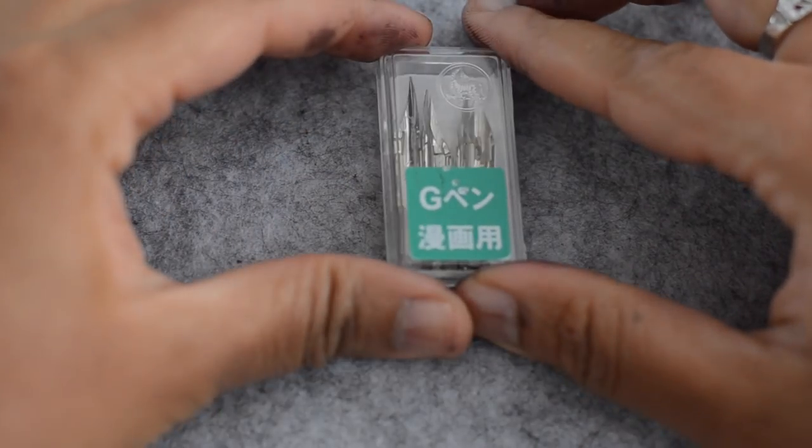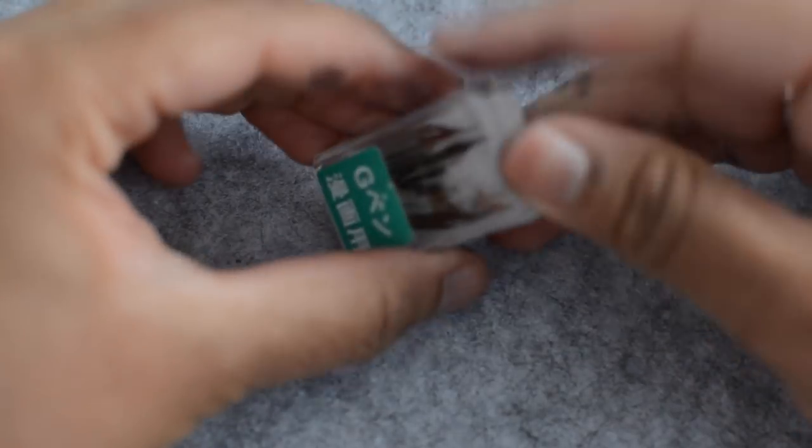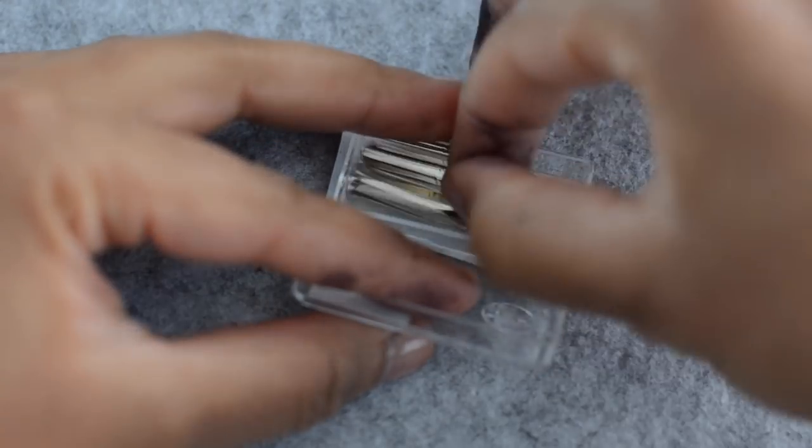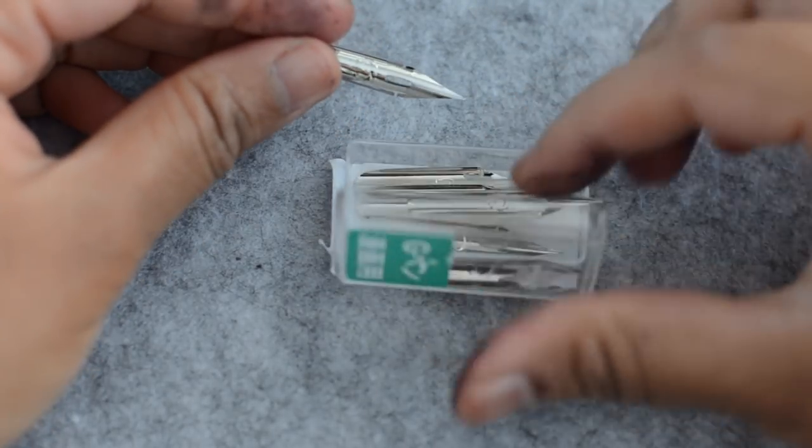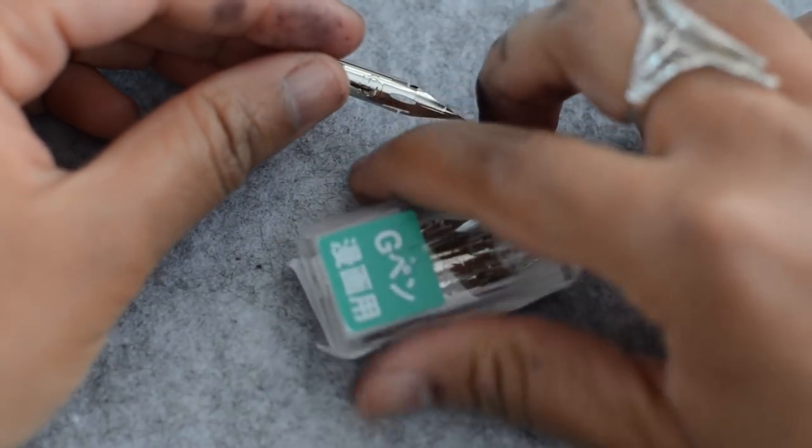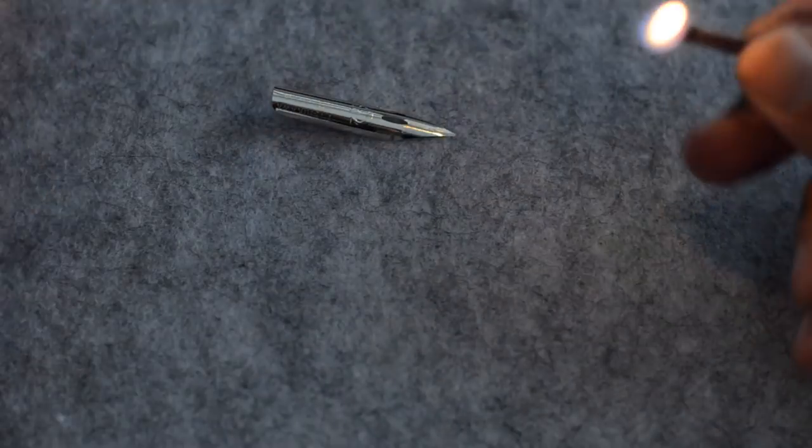So next you want to grab your G-nib, I'm going to use a Zebra G but you could use a Niko G and Tachikawa G as they have the same shape or even a platinum zebra. I prepped mine for use by putting it through a flame so make sure to do that for a couple of seconds.